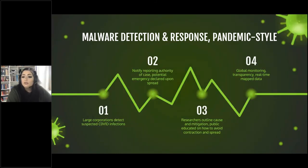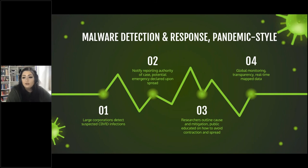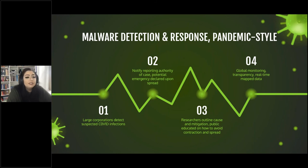Let's say your corporation picks up on some suspected COVID infections — the computer version. And let's say there is, in this perfect world, a World Health Organization but for information security incidents. When a large company detects this infection, they notify the global reporting authority. The authority tracking all reported cases can gauge at what point there is enough spread to warrant an emergency. Researchers can go to work outlining the causes of infections and how to potentially remediate them — think genetic reverse engineering of the COVID virus, the researchers trying to develop vaccines and cures. They also disseminate this information publicly so users can understand how to prevent this type of attack. Finally, once spread begins to slow and business returns to normal, the reporting authority can continue to globally monitor the spread of these infections, tracking spikes and resurgences as they occur.